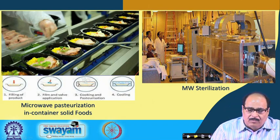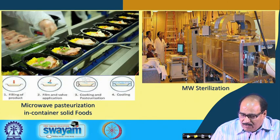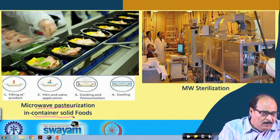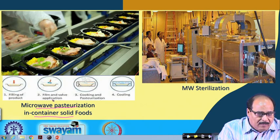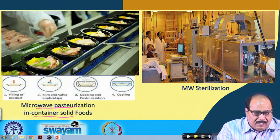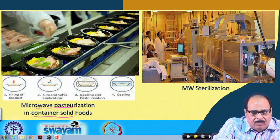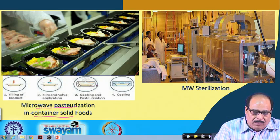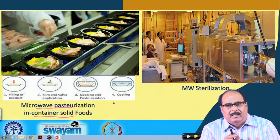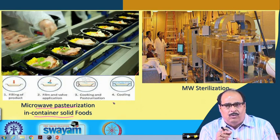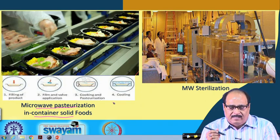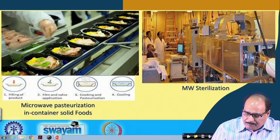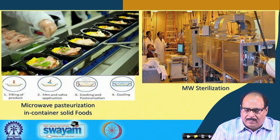These figures from the literature show a microwave pasteurization system for solid foods in containers, where filling, film and valve application, cooking, and pasteurization are performed on a conveyor belt as the material passes through the microwave system. After the required hold time, the product is cooled. A similar microwave sterilization system is also shown, illustrating the equipment concept.